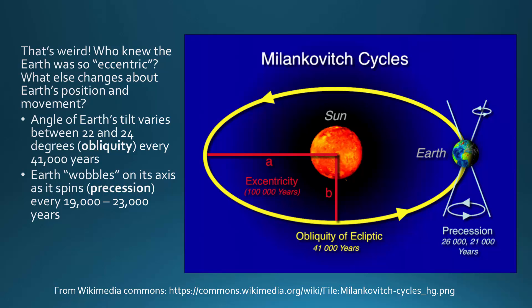Another thing scientists noticed is that Earth wobbles on its axis, and we can measure that. This wobble is known as precession. Precession tells us the axis is not moving in a precise circle — it wobbles slightly as it changes tilt. That happens every 19,000 to 23,000 years.